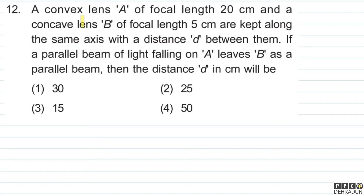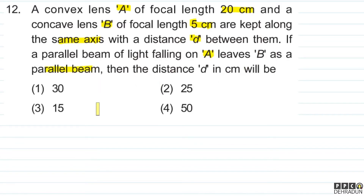The question says: A convex lens A of focal length 20 cm and a concave lens B of focal length 5 cm are kept along the same axis with the distance D between them. If a parallel beam of light falling on A leaves B as a parallel beam, then the distance D in cm will be?